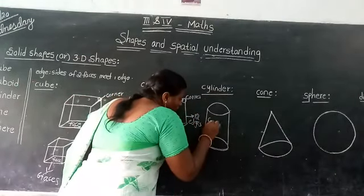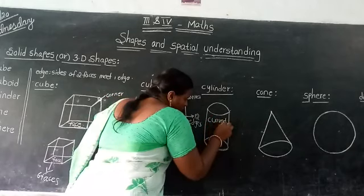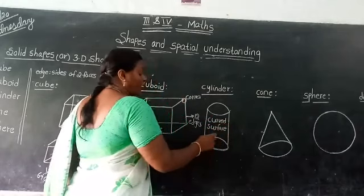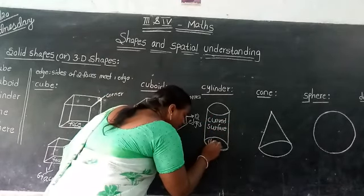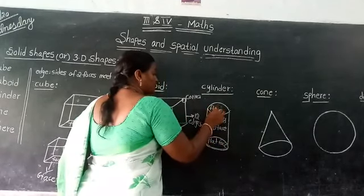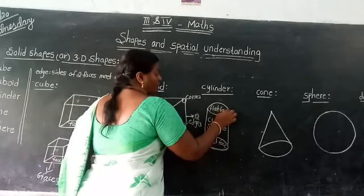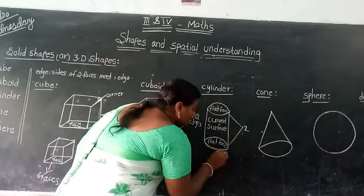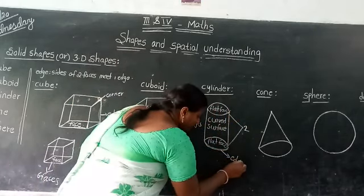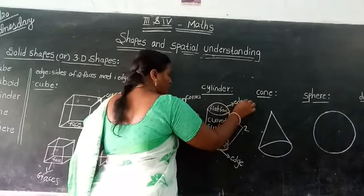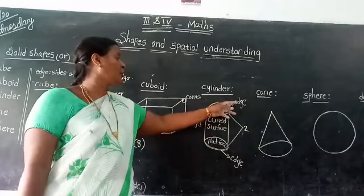A cylinder has 1 curved surface and 2 flat faces. This is the curved surface, and these are the two flat faces. A cylinder also has 2 curved edges. So finally, a cylinder has 1 curved surface, 2 flat faces, and 2 curved edges.